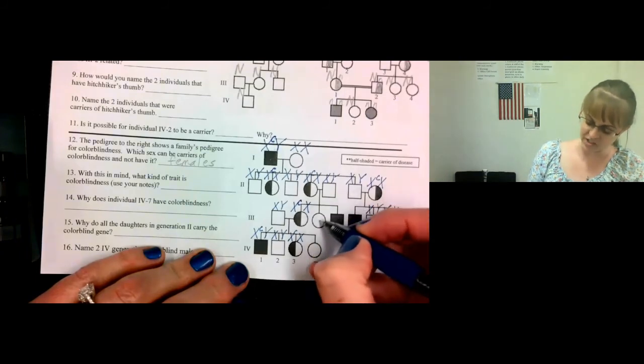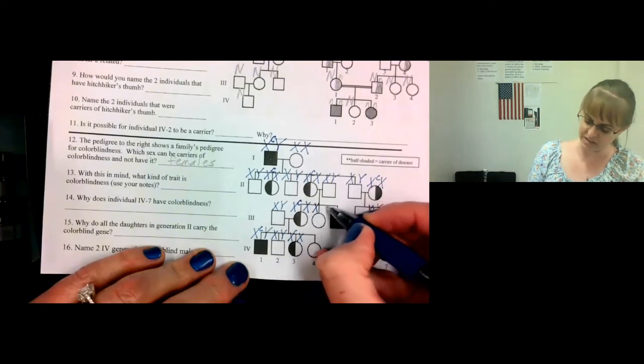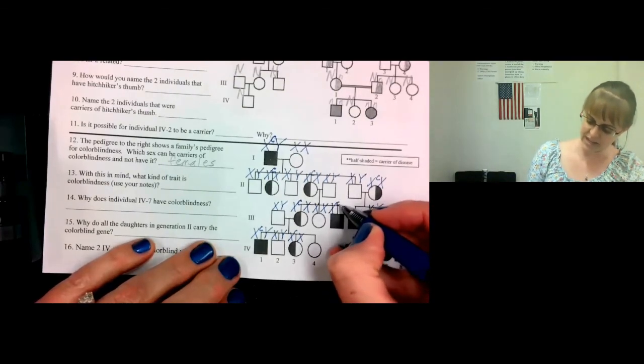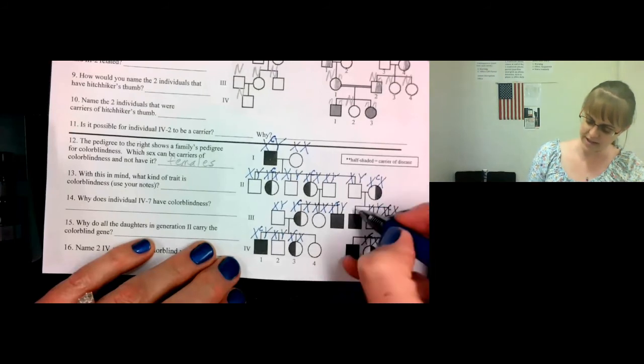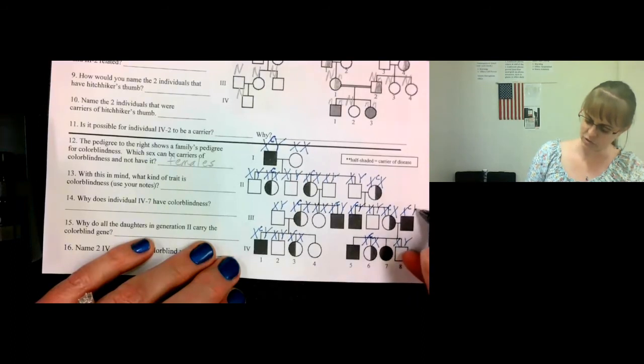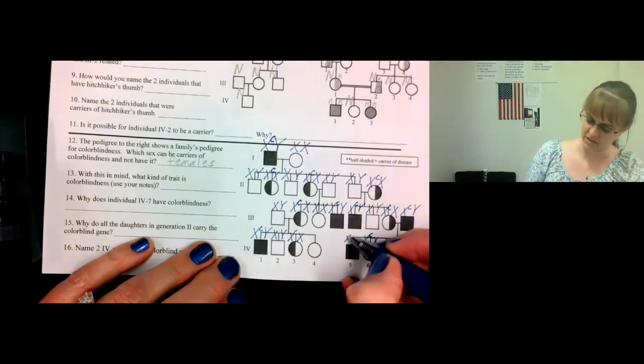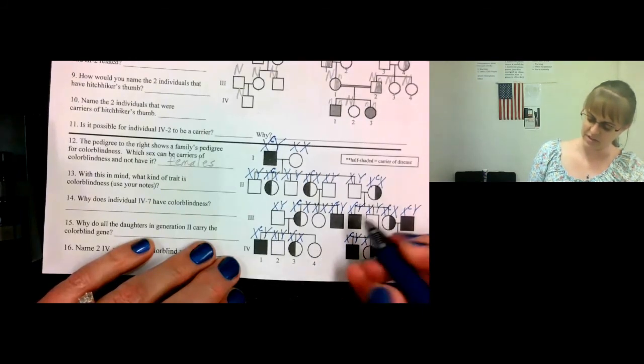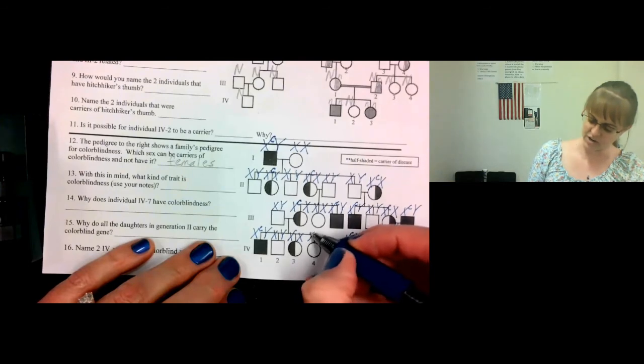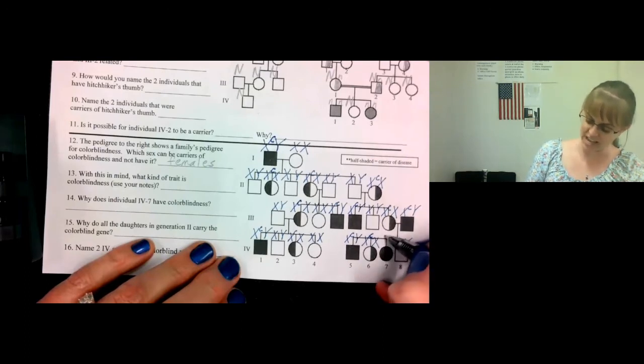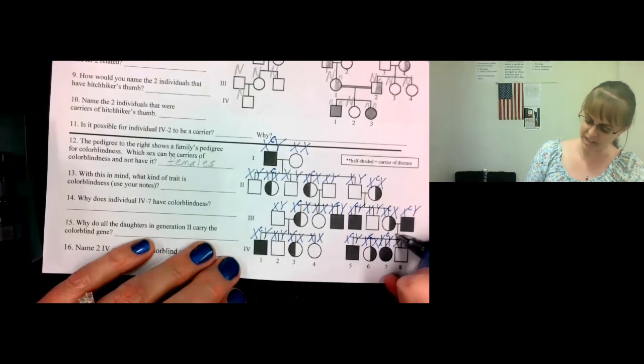This female does not have it, and she is not a carrier, so she must have two normal Xs. And this one, this female does have it. So she has two recessive colorblind Xs.